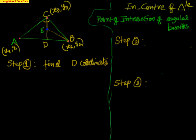The first step is to find the D coordinates. Let me also give the lengths: opposite to angle B, the length AB is small b; opposite to angle C, the length AB is small a; opposite to angle A, the length BC is small a. So the sides are labeled: this is C, this is B, and this is A.